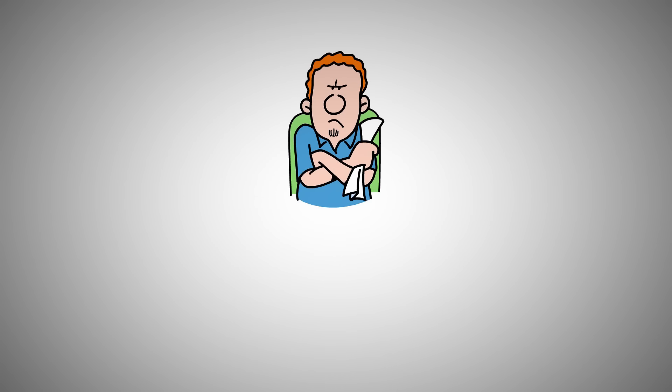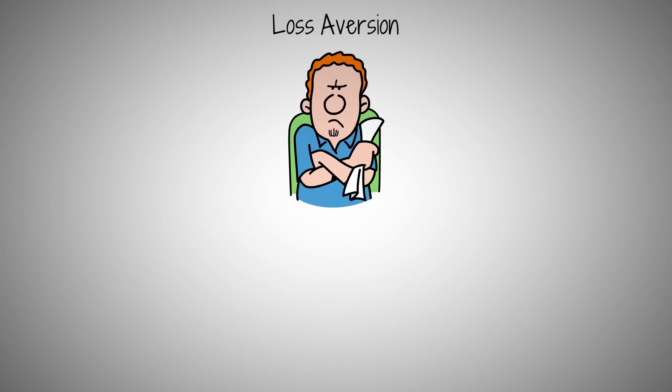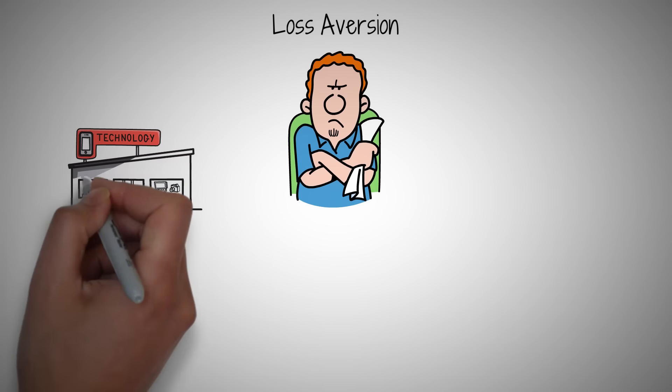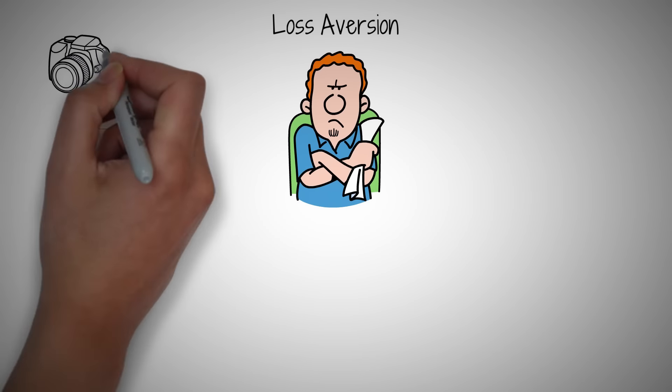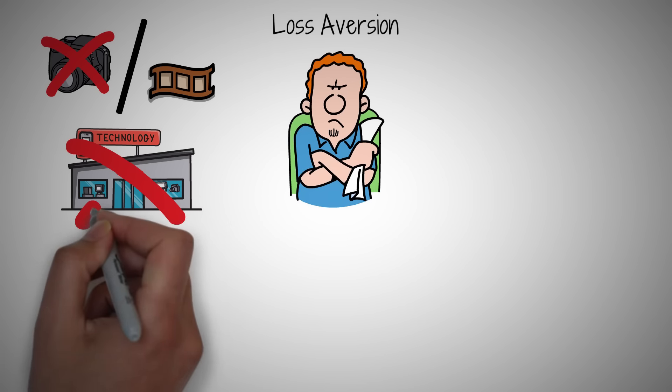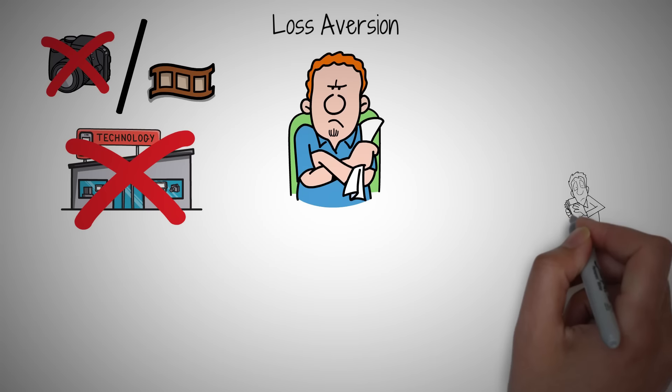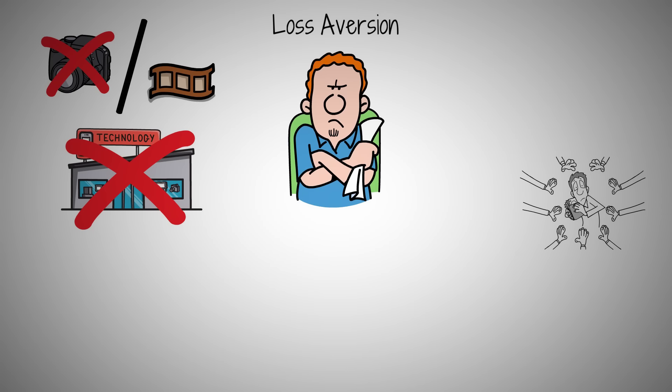Ever held onto something just because you didn't want to lose it, even if it wasn't benefiting you. This instinct is called loss aversion. It's like the story of Kodak, a giant in the photography industry. Kodak invented the digital camera but feared the loss of film sales, so they shelved the technology. This hesitation to embrace change due to fear of loss eventually led to Kodak's downfall in the digital age.